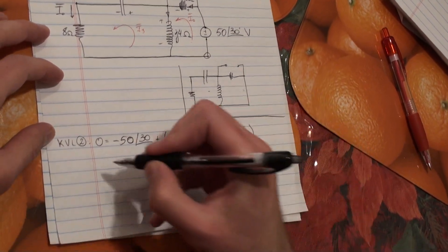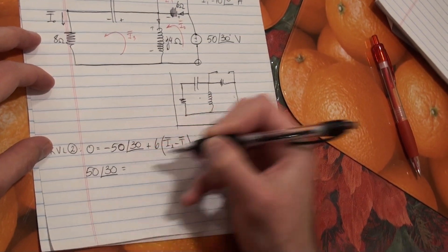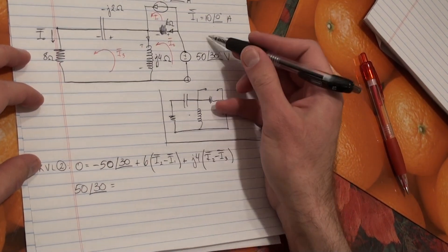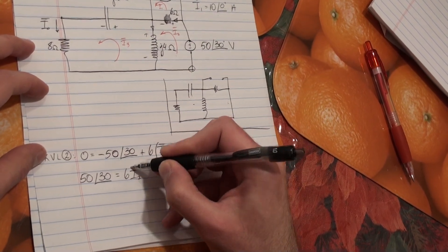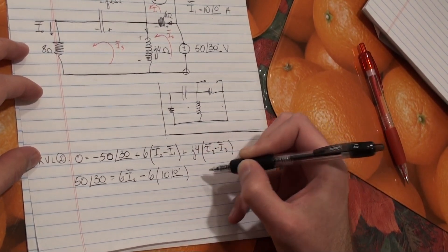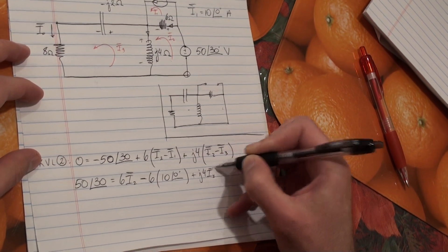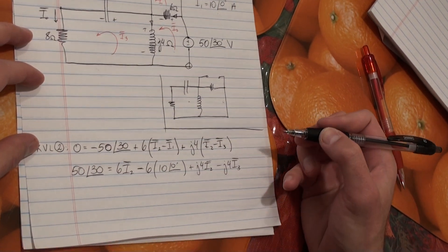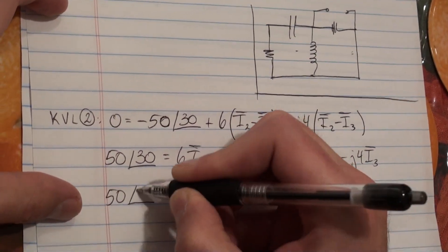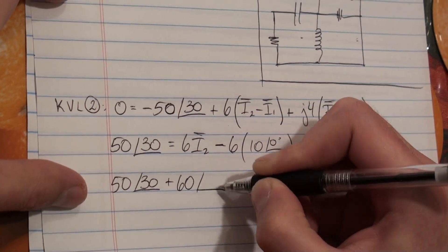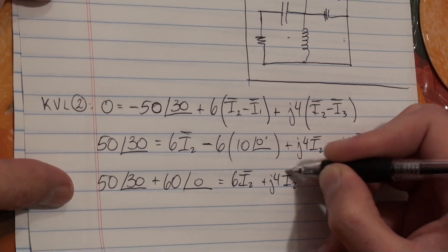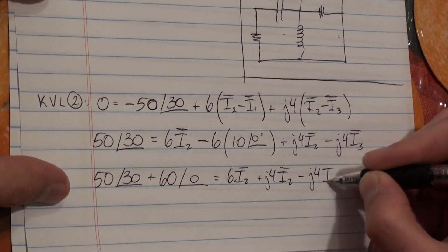Plus, we're going to choose the current to go down here. So it's going to be I2 minus I3. So J4, I2 minus I3. So this is a constant. We can move it over to the other side. So we get 50 at an angle of 30 equals. And now, I1, we have it from our constraint equation. So we can just plug in 10 angle 0 for I1. So we're going to get 6 times I2 minus 6 times 10 at an angle of 0 plus J4 I2 minus J4 I3.